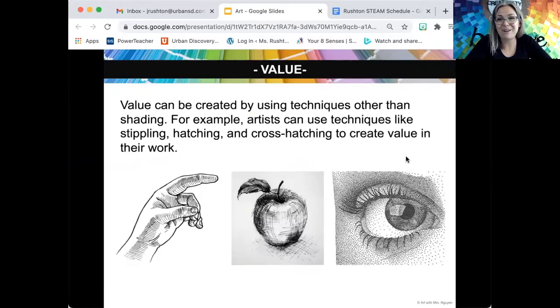The last one you're seeing here in the eyeball is called stippling. It's a lot like pointillism where you're using small dots. The more dots there are, the darker it gets. The fewer dots, the lighter it is. In the middle of the eye, it's almost solid full of dots, and then around the whites of the eye, there's just a few dots of stippling.